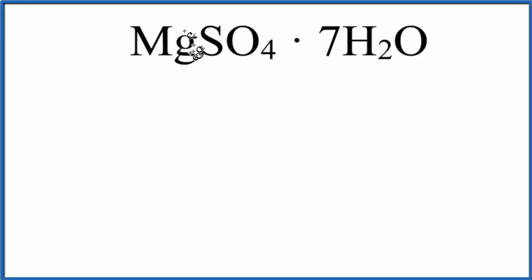When there's nothing written after an element symbol, it's just one. We assume it to be one. So for magnesium, we have one of those and in the sulfur, one. Over here for the oxygen, one as well.